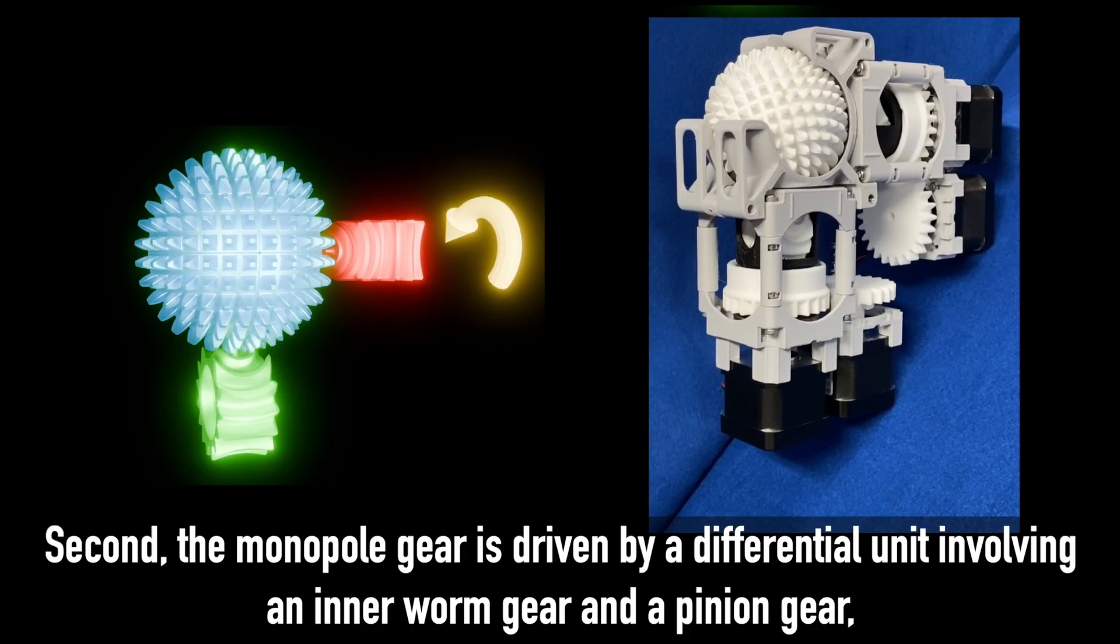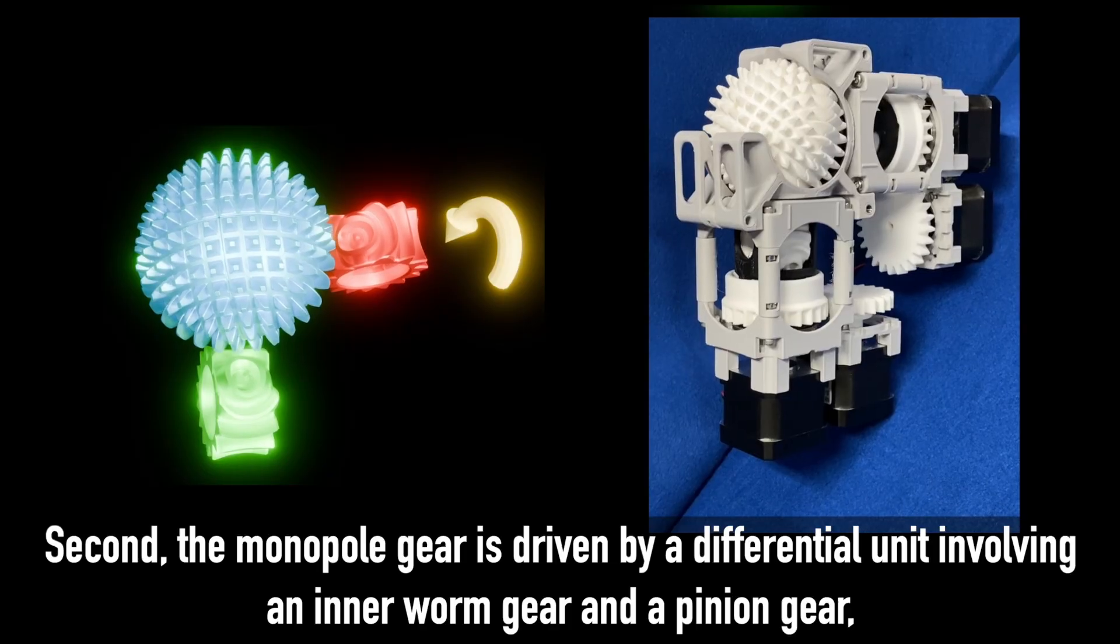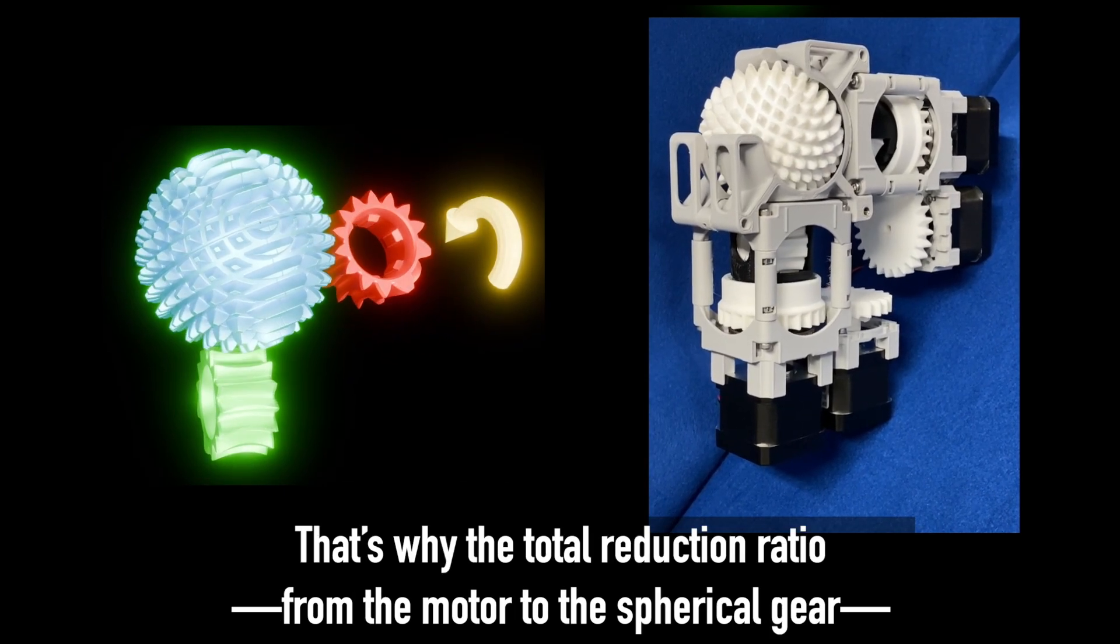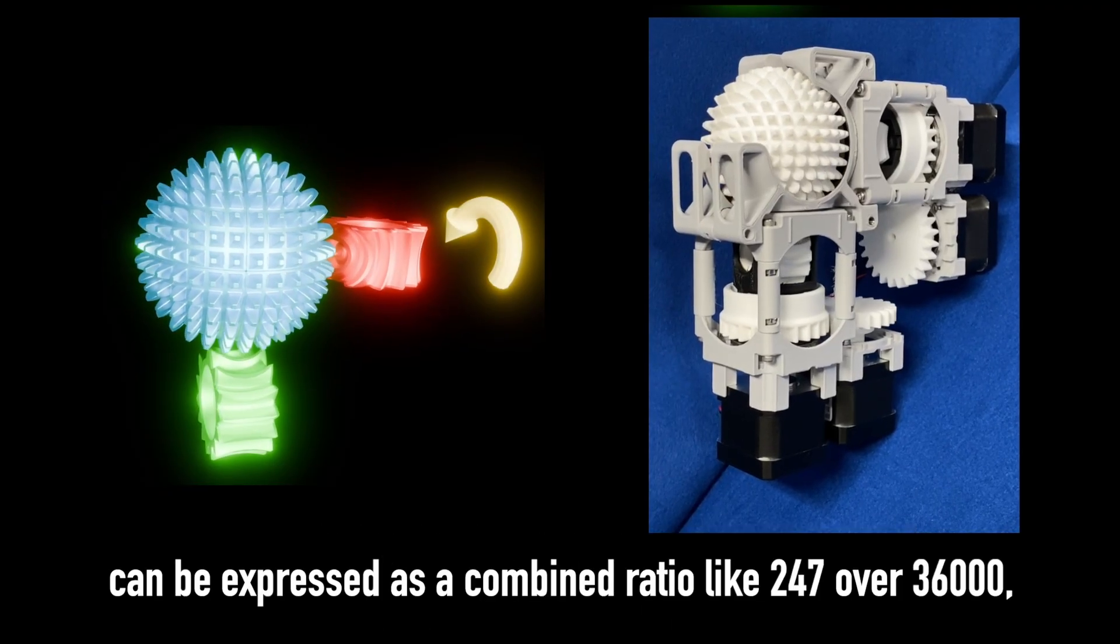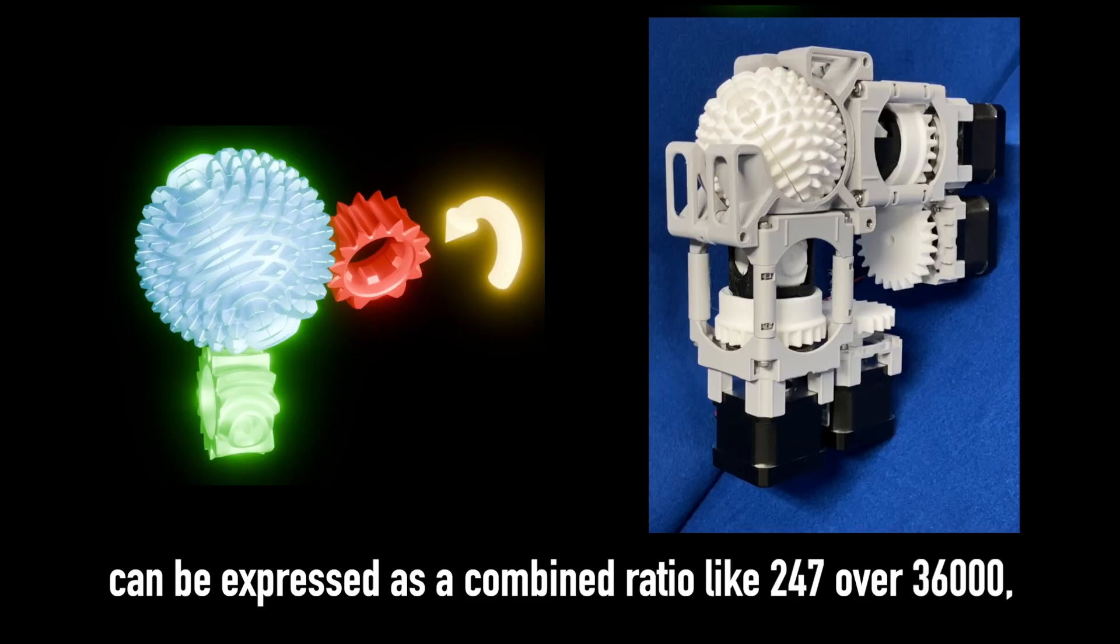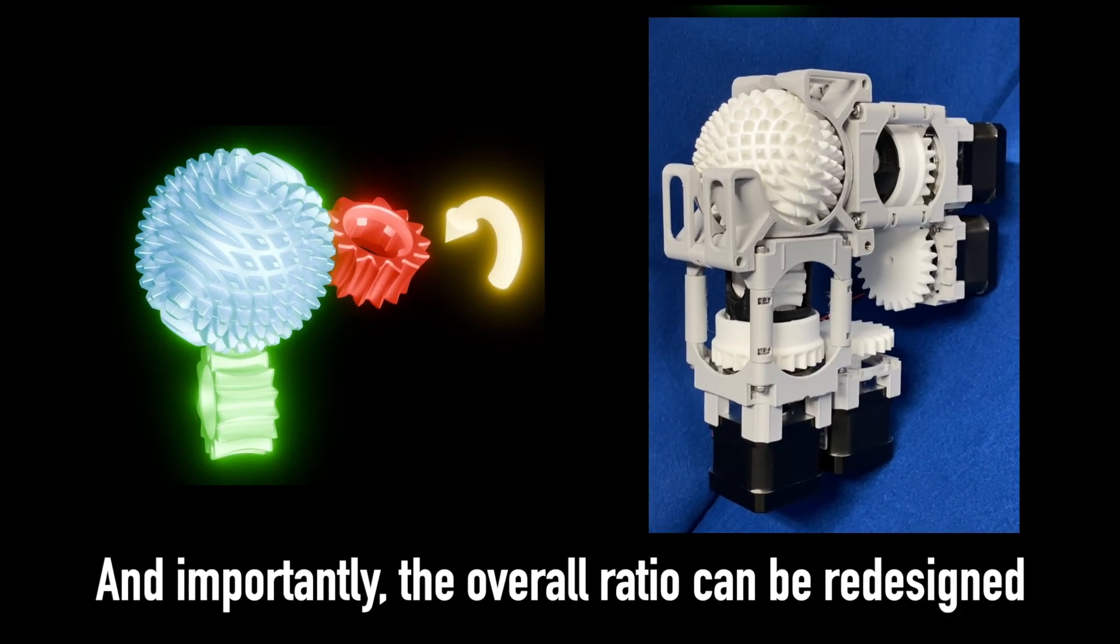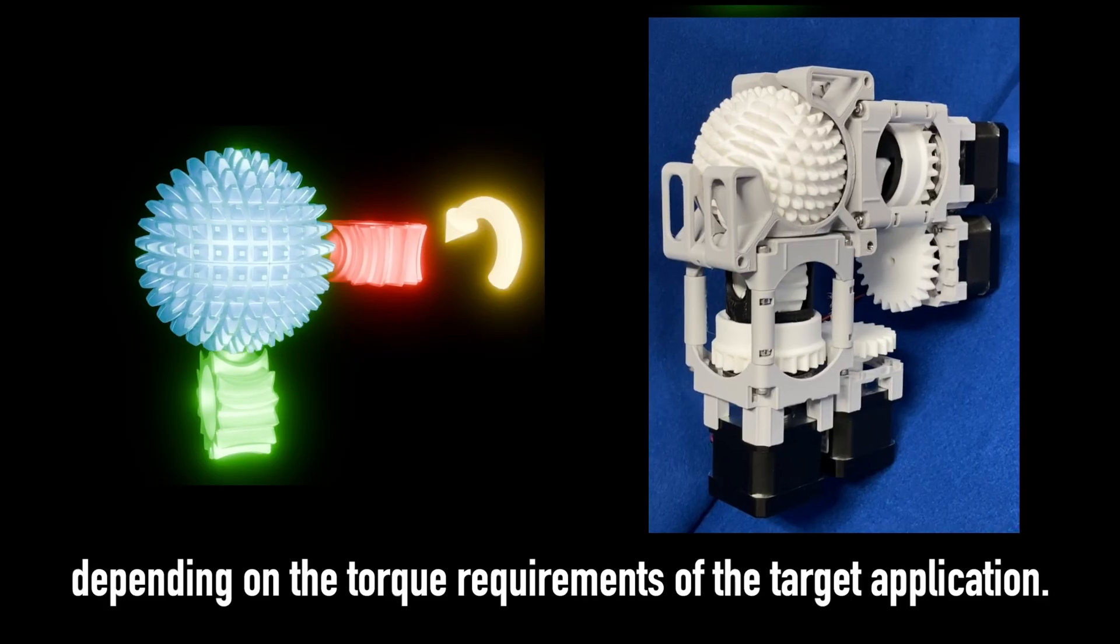Second, the monopole gear is driven by a differential unit involving an inner worm gear and a pinion gear, with additional stages such as helical gears from the motor. That's why the total reduction ratio from the motor to the spherical gear can be expressed as a combined ratio like 247 over 36,000, based on the full gear train. And importantly, the overall ratio can be redesigned depending on the torque requirements of the target application.